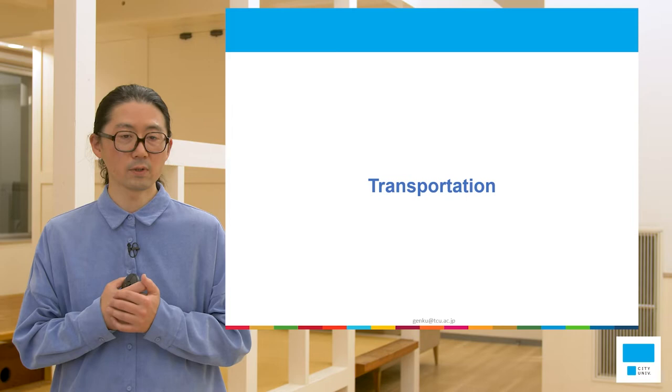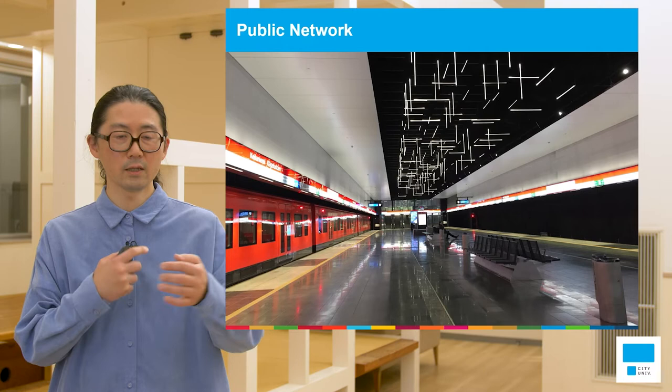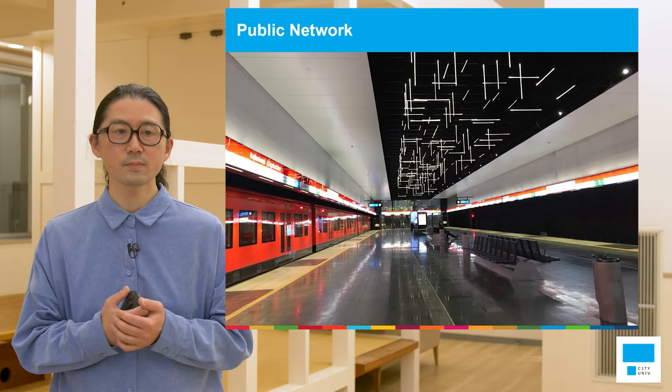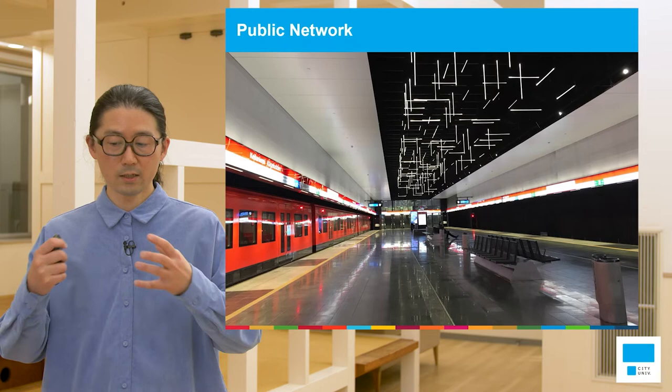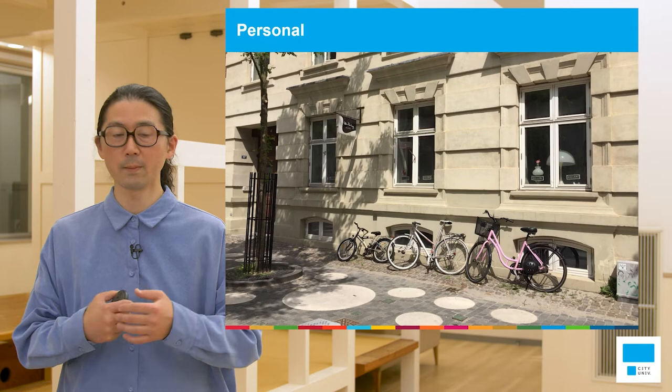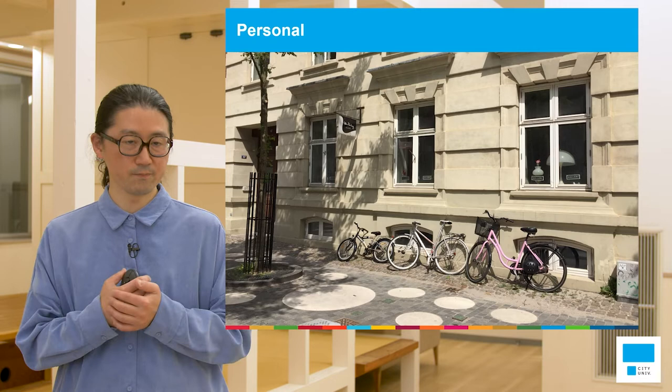I will show you one example about transportation. We can commute and transport between two areas using public systems like metros, public buses, and taxis, and this gives our activities greater freedom. We can of course also use personal transportation equipment like bicycles and private cars, and enjoy moving around the cities by ourselves.